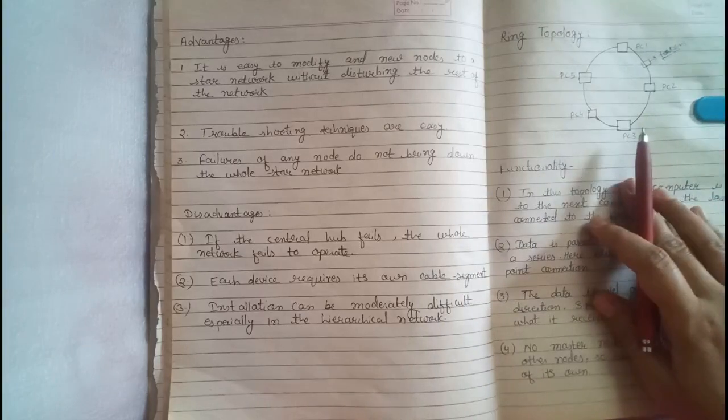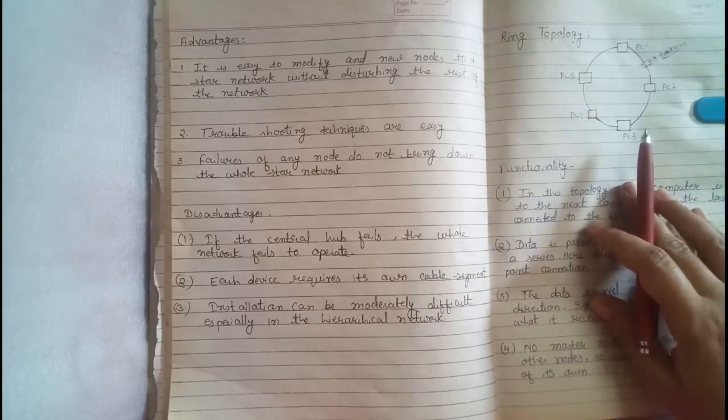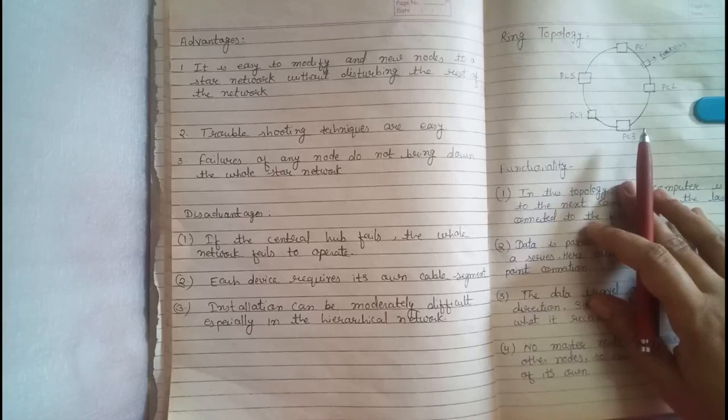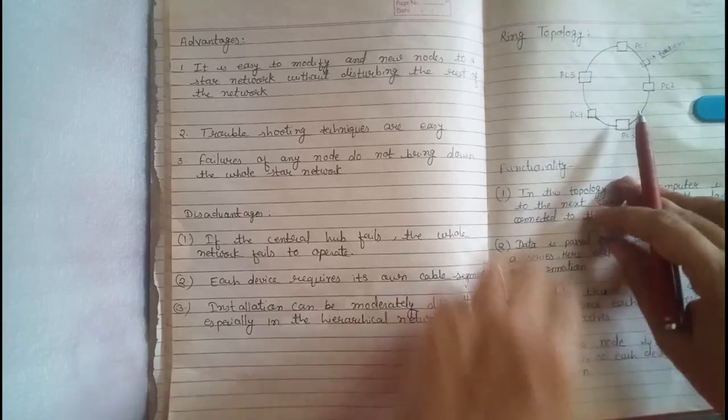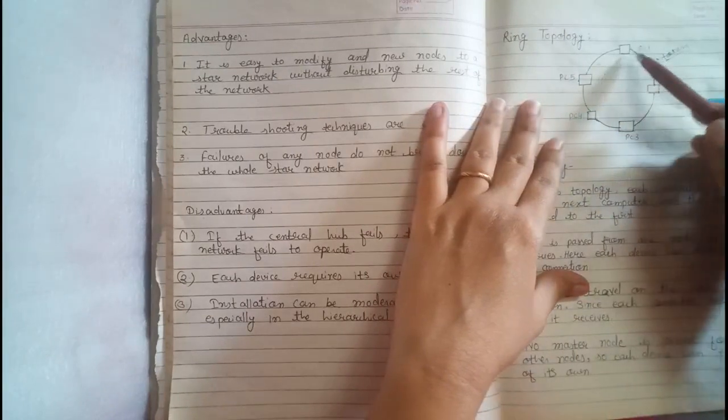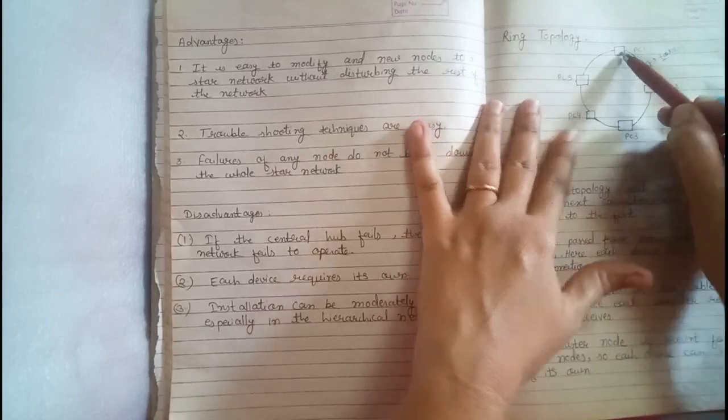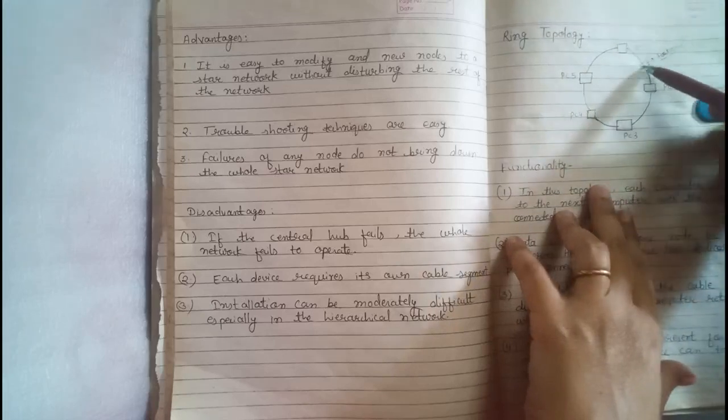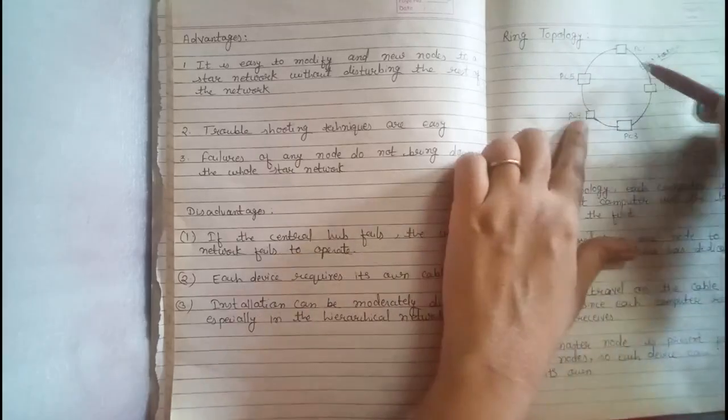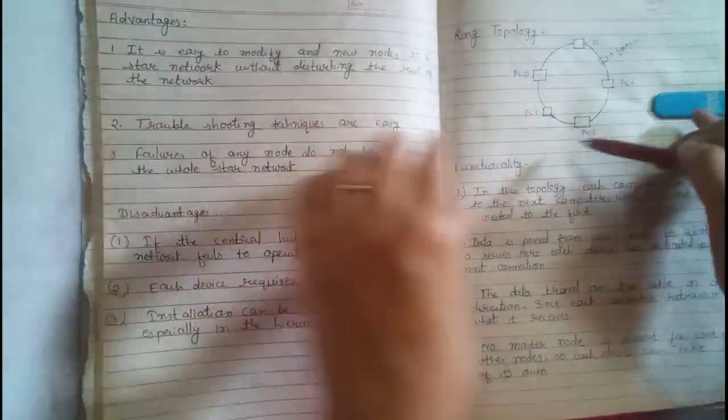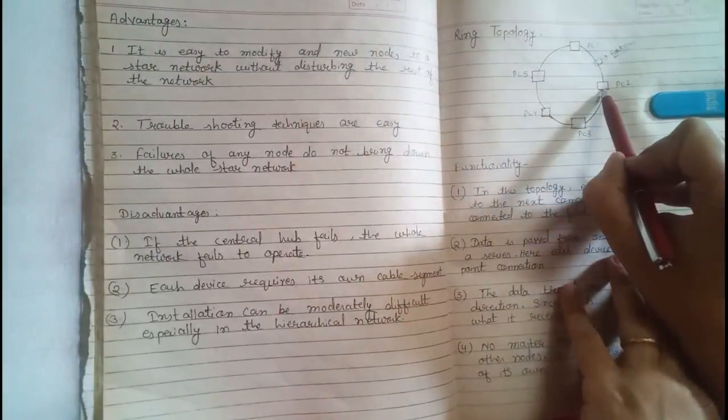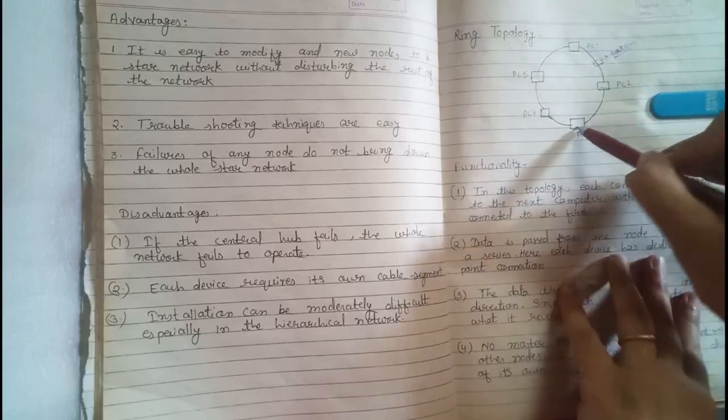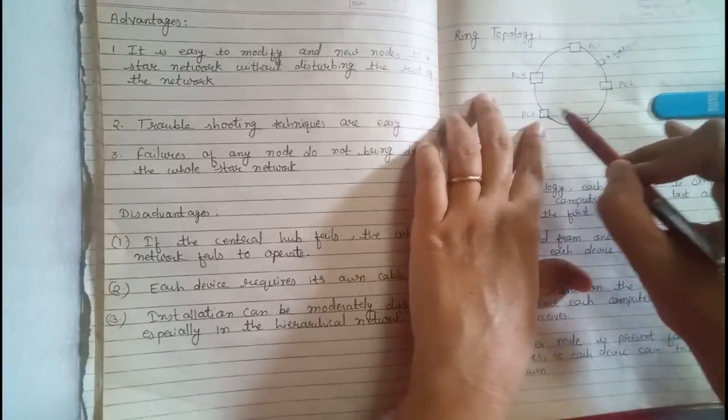Destination host send acknowledgement with the help of token and send to the source host. When acknowledge received by the source and then token is free, token is again circulating in ring network. Okay, clear. This is the empty token which circulate in the ring network. When we saw the previous example, that PC1 wanted to send data to PC4. So, PC1 will capture this token. It will write the data and address which is PC4.